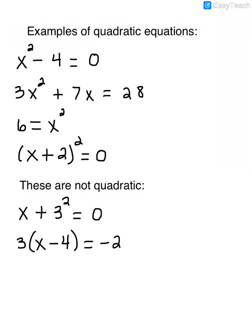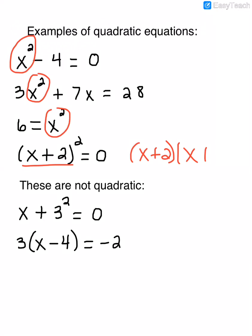These are some examples of quadratic equations: x squared minus 4 equals 0, 3x squared plus 7x equals 28, 6 equals x squared, and x plus 2 squared equals 0. In all of these equations, the x is squared. In the last one, if we were to FOIL it, when I multiply x times x, I get x squared, and that's the highest power. So a quadratic equation has a term that's x squared and no other higher power.